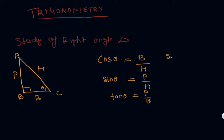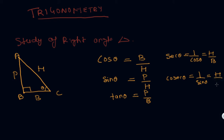The other three are reciprocals. The reciprocal of cos theta is sec theta: sec theta equals 1 upon cos theta, which equals hypotenuse upon base. Then cosec theta equals 1 upon sin theta, which equals hypotenuse upon perpendicular. The last one is cot theta, which equals 1 upon tan theta, that is base upon perpendicular.